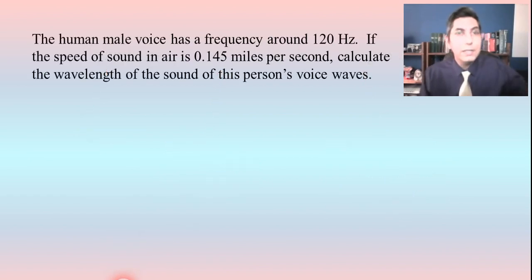Now, how does this equation work? Well, let's try an example. Let's say that we're going to have a problem like this. The human male voice has a frequency around 120 hertz. And so that's 120 wave cycles per second. If the speed of sound in air is 0.145 miles per second, calculate the wavelength of the sound of this person's voice waves.